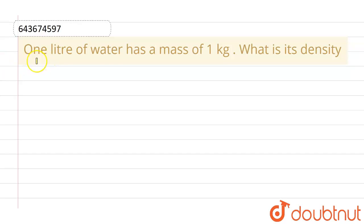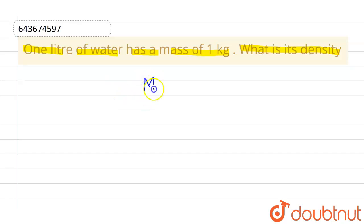Hello everyone. The given question is: one liter of water has a mass of one kg. What is its density? So the given mass of the water is one kg.